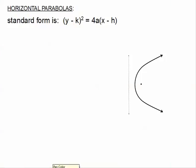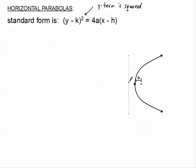Now let's look at the standard form for a horizontal parabola. This time the y quantity is the term that's being squared — that's what makes this a horizontal parabola. When y is being squared, you cannot have a function, so it has to be one that either opens to the right or opens to the left. The same relationship holds: the distance from the vertex to the focus is exactly a units, the distance from the vertex to the directrix is exactly a units, and from the focus to each point of symmetry is exactly 2a units.